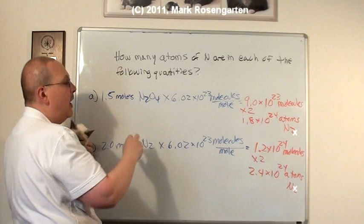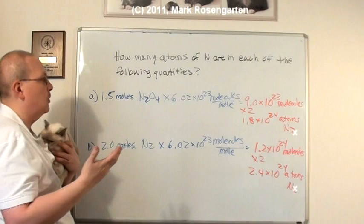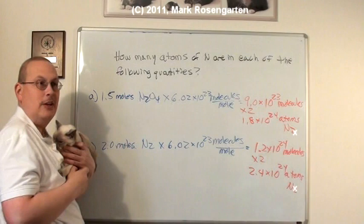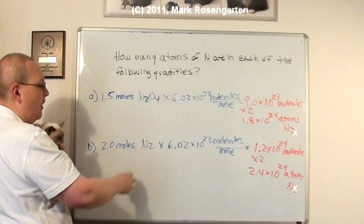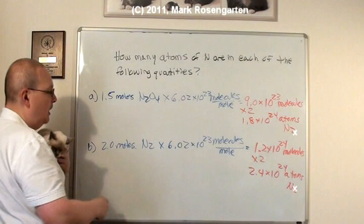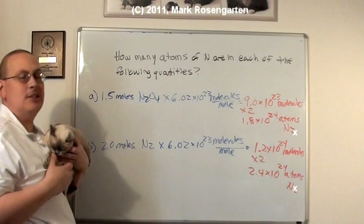There is another way you could have done this. You could have done this to start off with. We could have said, well there's 2 atoms for each molecule of nitrogen. So if I've got 1.5 moles of N2O4, I actually have 3.0 moles worth of nitrogen total in that substance. Here I've got 2.0 moles of N2O4, but there's 2 atoms of nitrogen per molecule. So that would have been actually 4.0 moles of nitrogen atoms. So it doesn't really matter whether you double it to start or whether you double it when you're done. The net effect is the same.